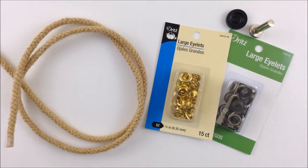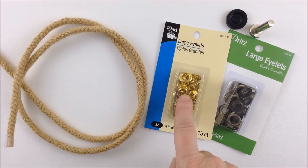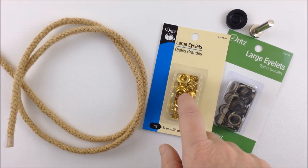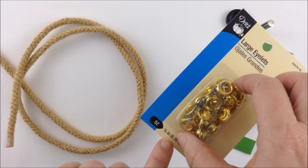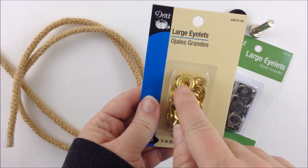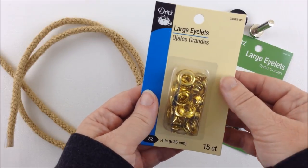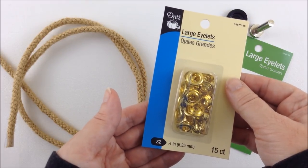To make the retreat bag rope handle you're going to need some eyelets, sometimes they're known as grommets, and you'll need to get the quarter inch size meaning the hole in the center is quarter inch across. In the metric system that's about six millimeters.